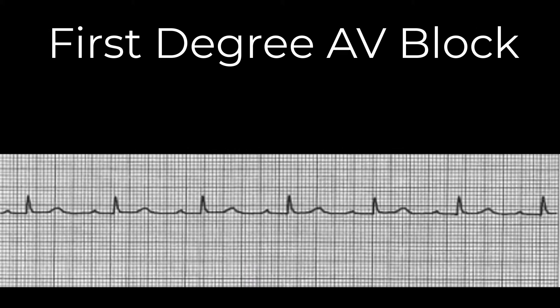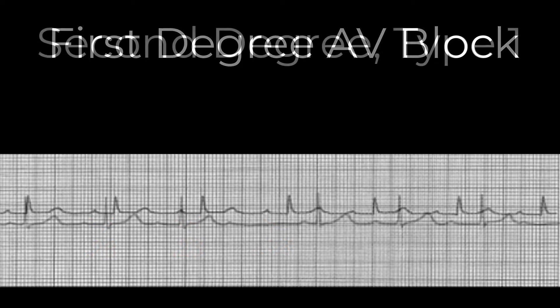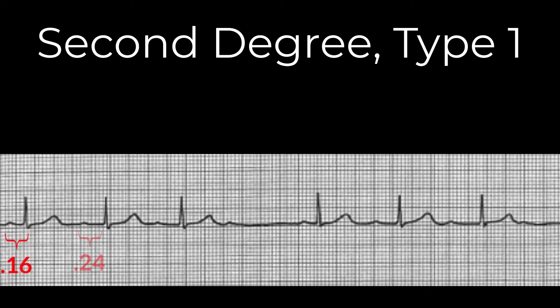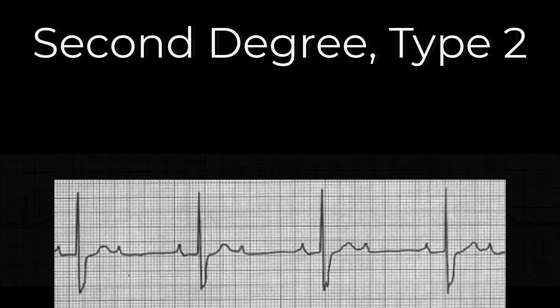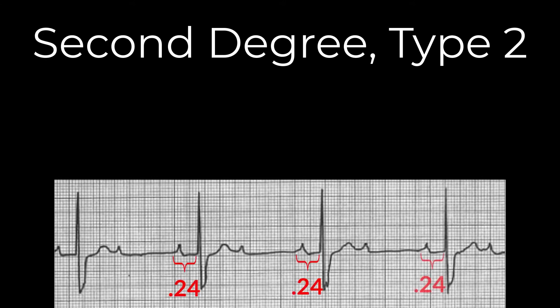If every P wave has a QRS and they all have PR intervals that are longer than 0.20, this is a first-degree AV block. If the PR gradually gets longer until a QRS is dropped, this is a second-degree type 1, also called a Wenckebach block. If every time the PR interval produces a QRS that PR interval is the same, but sometimes the P wave produces no QRS at all, this is a second-degree type 2.